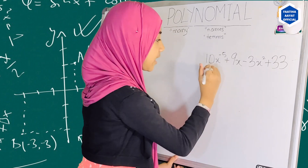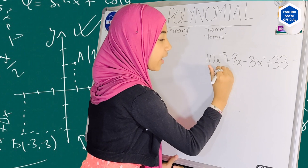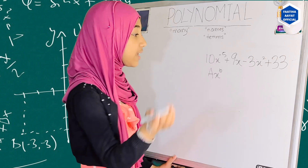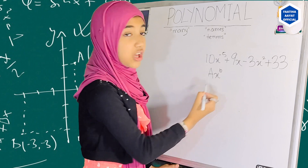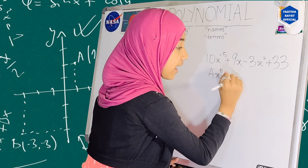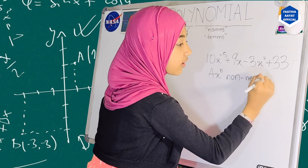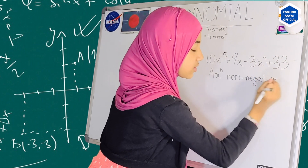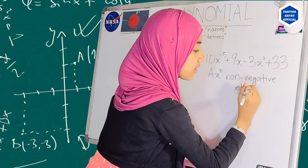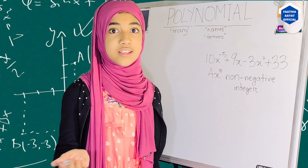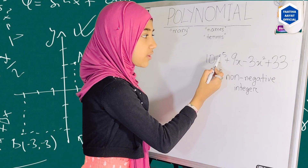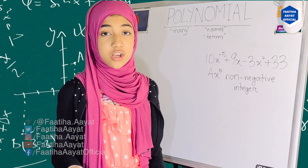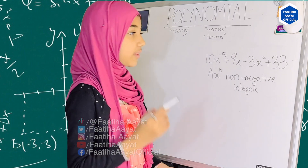So why is this not a polynomial? Because if it has to be a polynomial, it has to be of the form ax to the power b, where a is our coefficient multiplied with our variable, and the power on top of the variable has to be a non-negative integer. Here you can see that it has minus 5 — minus 5 is not a positive integer, it's a negative integer. It has to be a non-negative integer.